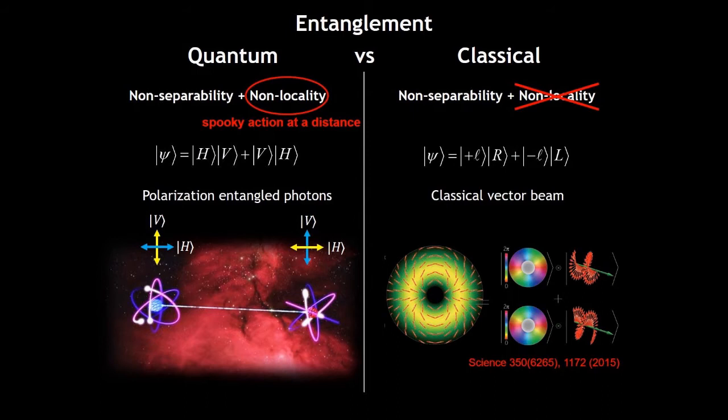Well, in classical field, there is no non-locality, but we can still use the local degree of freedom in structural light to construct the non-separability, namely the classical entanglement. For example, the vector beam has a space polarization non-separable state.